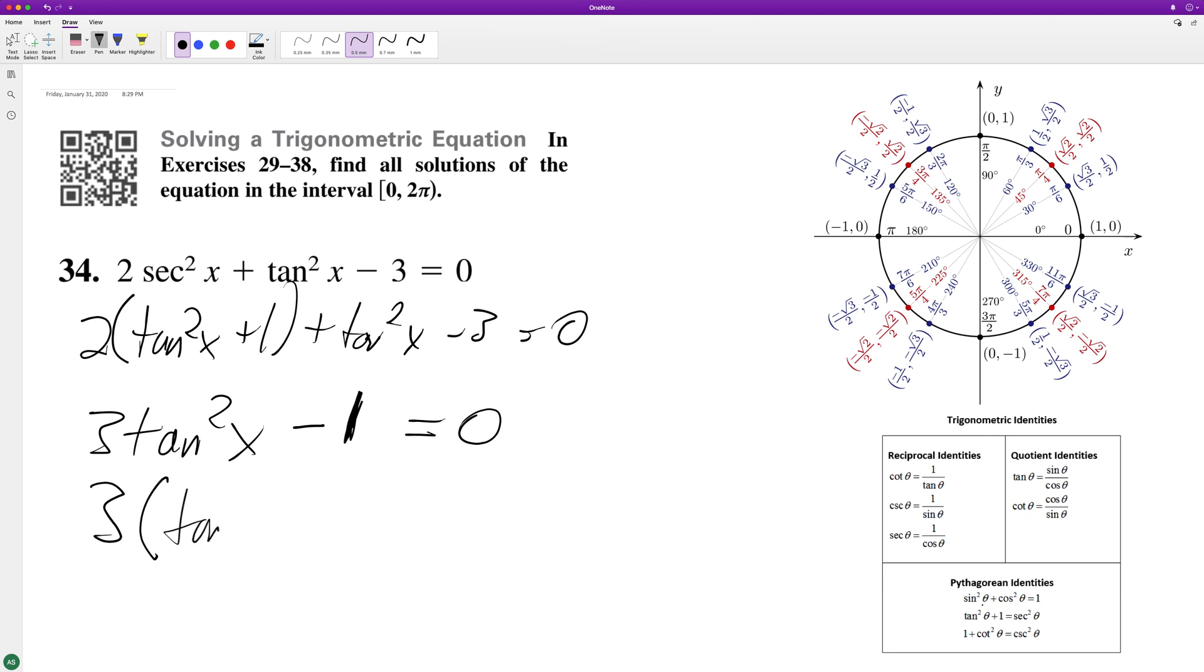So this becomes tangent squared x minus one third equals zero. And then we can get rid of three, and then we'll have tangent x minus one over root three times tangent x plus one over root three equals zero.